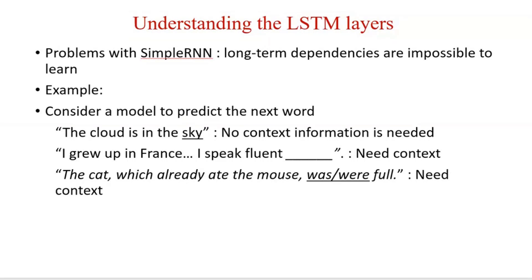Let's try to understand this with the help of examples. The first example is: 'The cloud is in the blank.' In the blank, we have to place 'sky.' That is a simple one — no context information is needed. In such cases, simple RNN works fine.